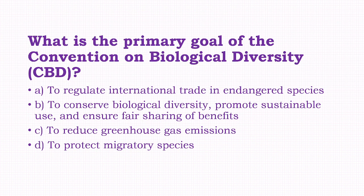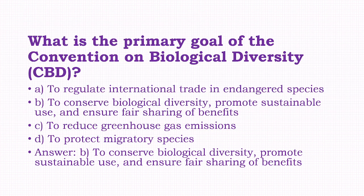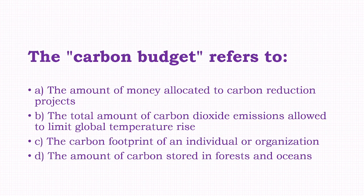What is the primary goal of the Convention on Biological Diversity? Options: to regulate international trade in endangered species, to conserve biological diversity, promote sustainable use and ensure fair sharing of benefits, to reduce greenhouse gas emissions, to protect migratory species. The answer is option B, that is to conserve biological diversity, promote sustainable use and ensure fair sharing of benefits.